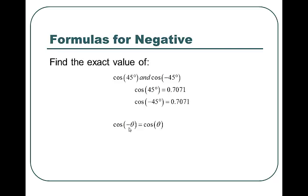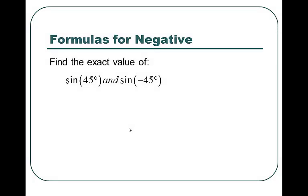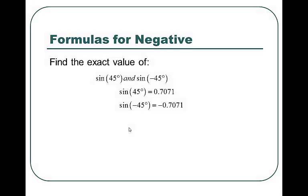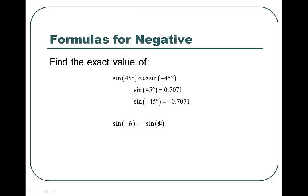Let's see if it works for sine and tangent. Find the exact value of sine of 45 degrees and the exact value of sine of negative 45 degrees. You will notice that it doesn't work — it's not the same. The sine of 45 degrees is 0.7071, and the sine of negative 45 degrees is negative 0.7071. That leads us to a rule: the sine of negative theta is negative sine theta. That negative gets factored out.